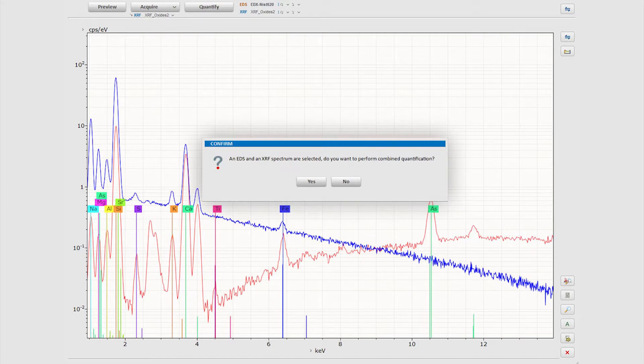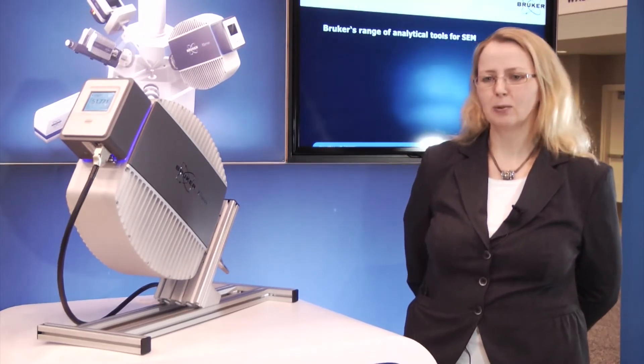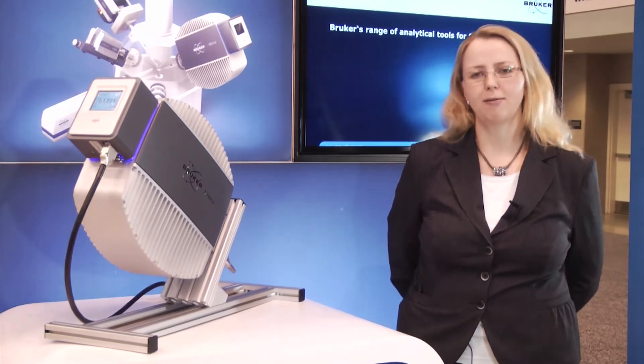This enables us to analyze the same area with EDS and micro X-RF. Micro X-RF is an energy dispersive technique so we are using the EDS silicon drift detector to collect the incoming X-rays produced by fluorescence.